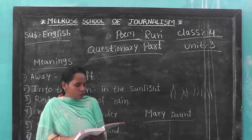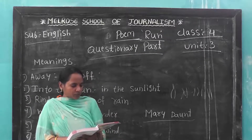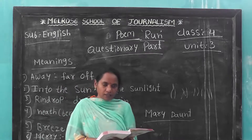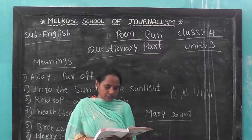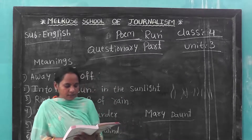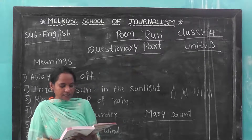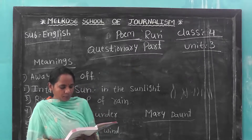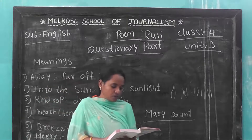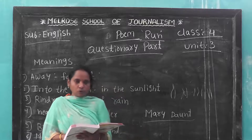Now, question answers. See children — what does the poem tell us to do? The poem tells us to run away from the city towards the countryside, to run throughout the day to different places in the countryside, and to be happy and joyous.